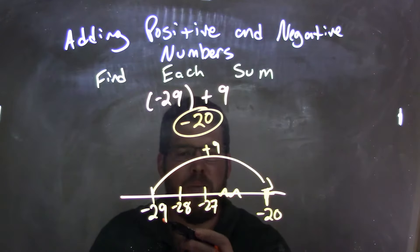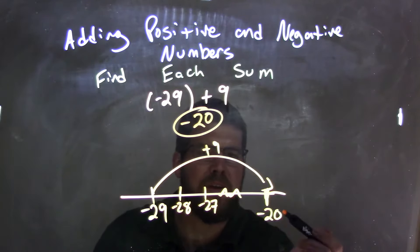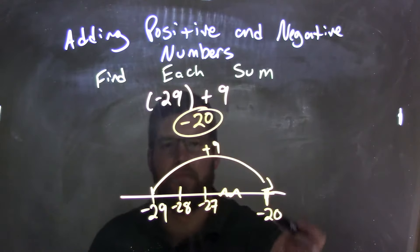So again, negative 29, and we added 9 units to it, positive 9 units to get a negative 20 as our final answer.